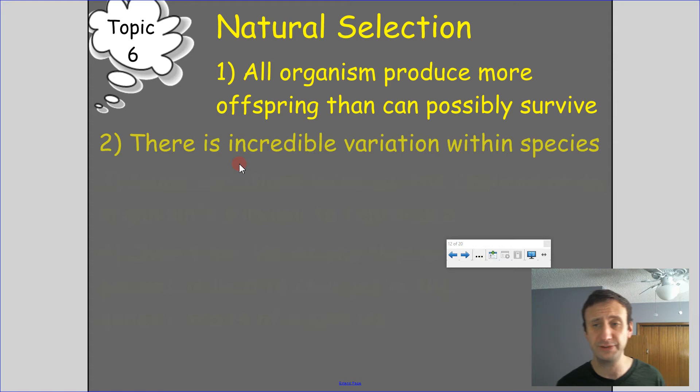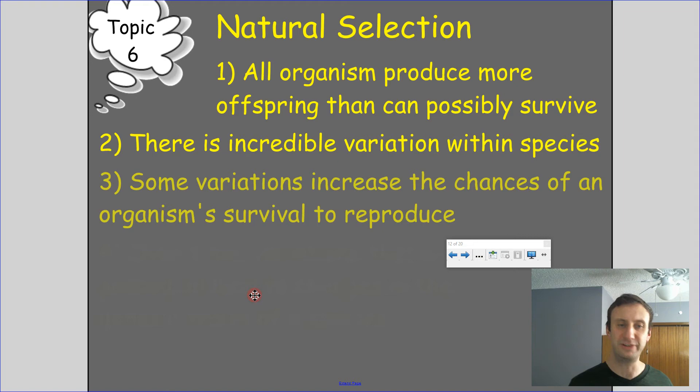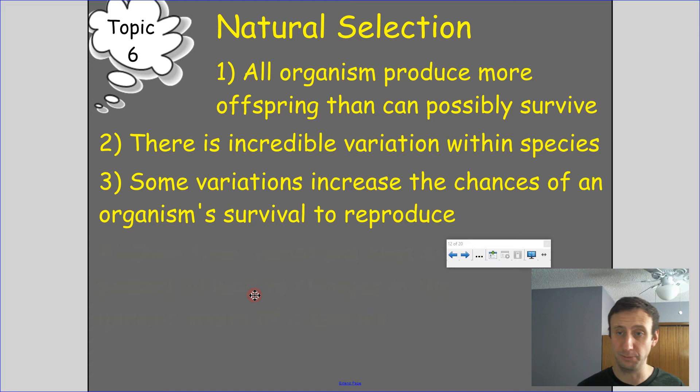There is incredible variation within species — even more with sexual reproduction, but even asexual reproduction has some variation due to things like mutations. So we have variation. Some variations increase the chances of an organism's survival to reproduce — some things end up more adapted to survive than others and as a result are more able to reproduce.